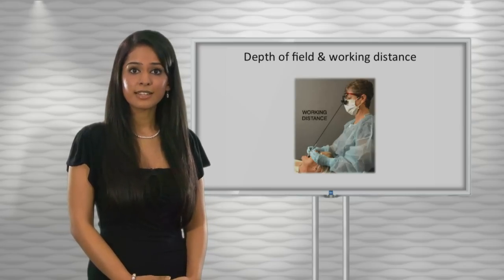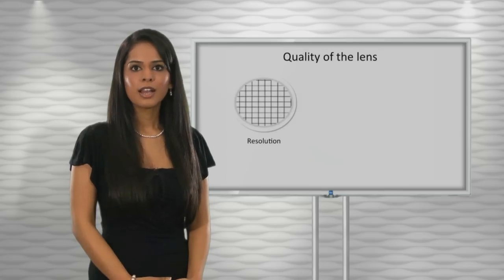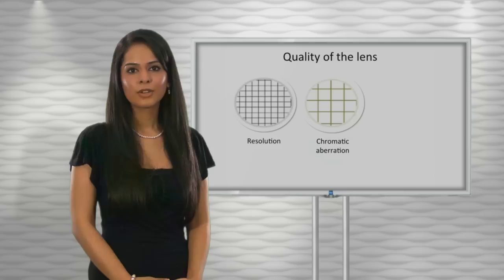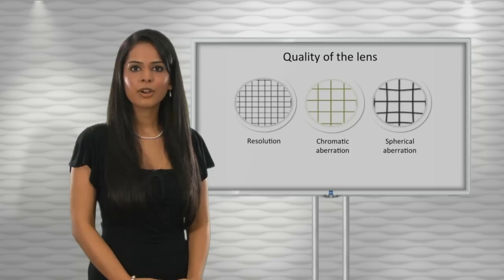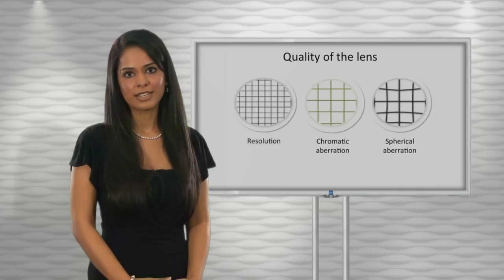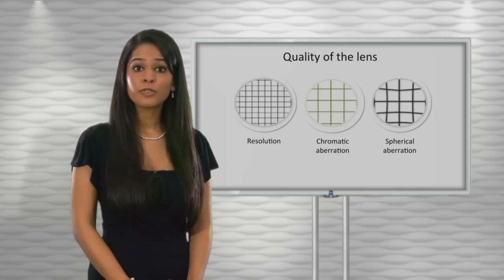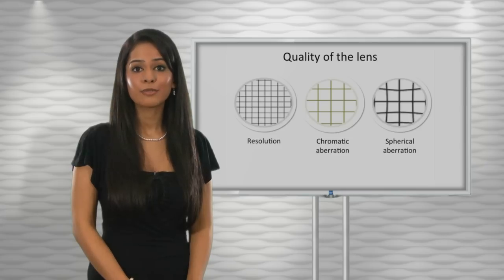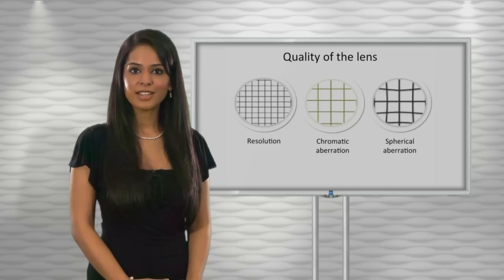When considering the quality of the lens, you need to look at three properties. Resolution: how well can you distinguish the fine detail. Chromatic aberration: looking at the changing color when looking through the lens. And spherical aberration: checking for any distortions of shape and changes when you look through the lens. The most practical way of assessing all of these three is by looking at a flat ruler through the loupes. Check to see how well you can distinguish the fine lines, look at the color, and also check the lines appear straight.